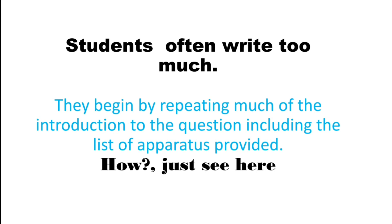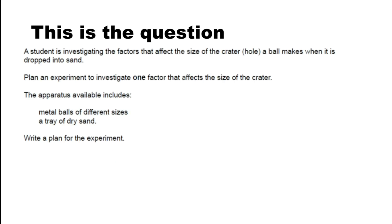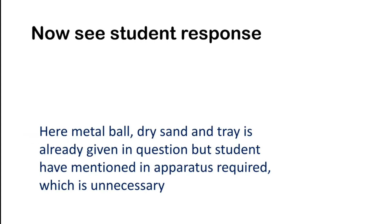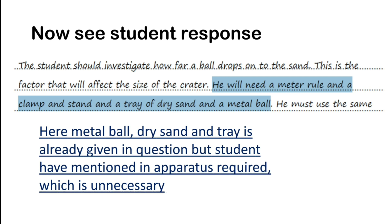Students often write too much — they begin by repeating much of the introduction to the question, including the list of apparatus provided. For example, the question already states that apparatus includes metal balls of different sizes and a tray of dry sand. But in the student's response, highlighted here, the student wrote they would need a meter rule, a clamp and stand, a tray of dry sand, and a metal ball.